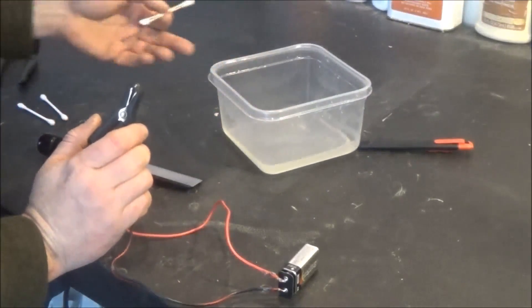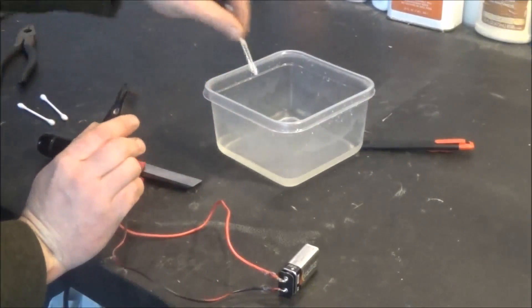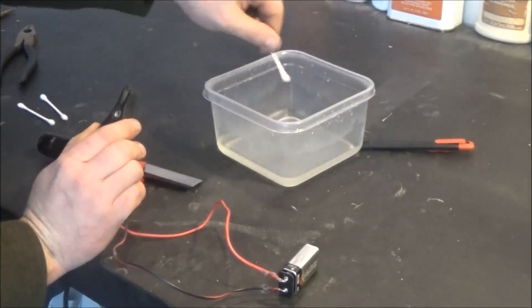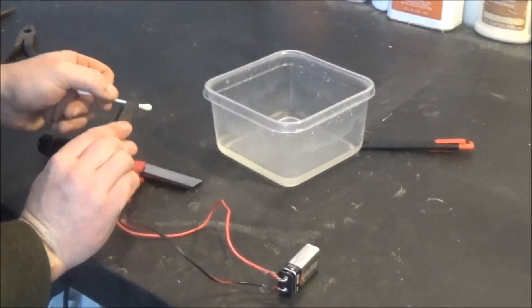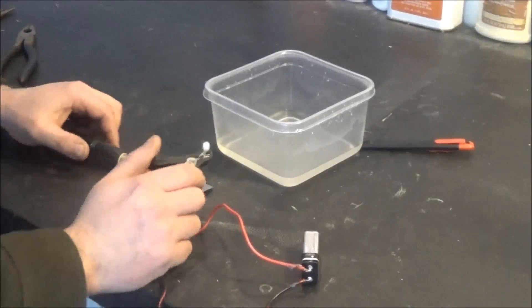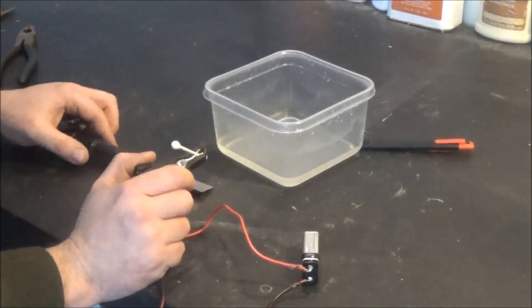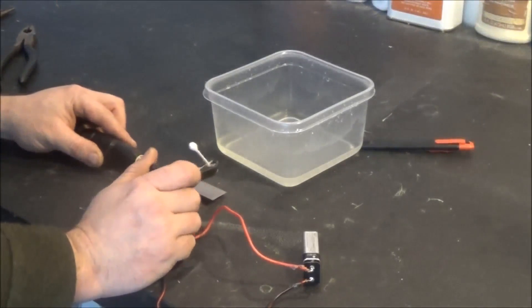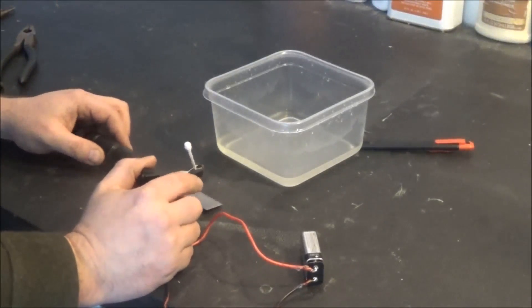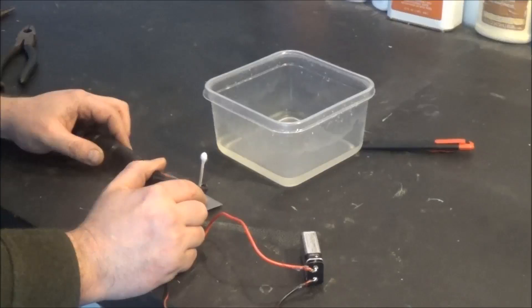You can take salt water and a q-tip like so and just dip it in there. This is by no means precise because you want to use the ink methods of applying it on there by taping it off. I'm just going to show you guys how it does work and you can barely hear a sizzle.